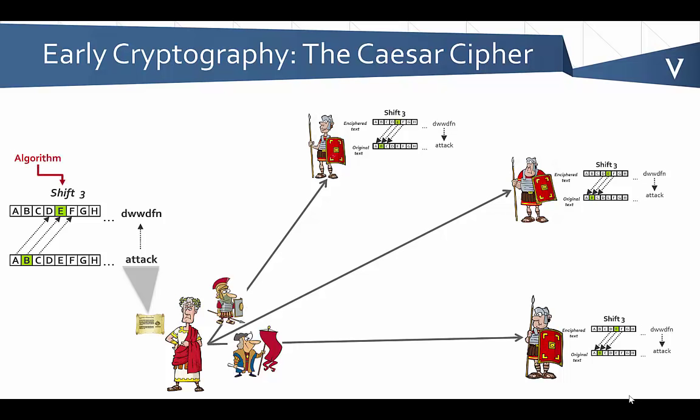If we look at this, the shift is the algorithm that's used. You may have heard of algorithms in cryptography, and in this case we just use a simple example to illustrate what an algorithm is. Next, we have the key, which is three. In this particular case, we have 25 possibilities for a key, because if we don't shift that's the first option, and then we have 25 other options to shift. Caesar chose to shift three.